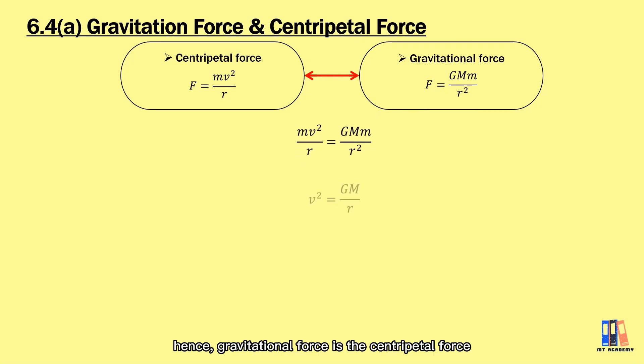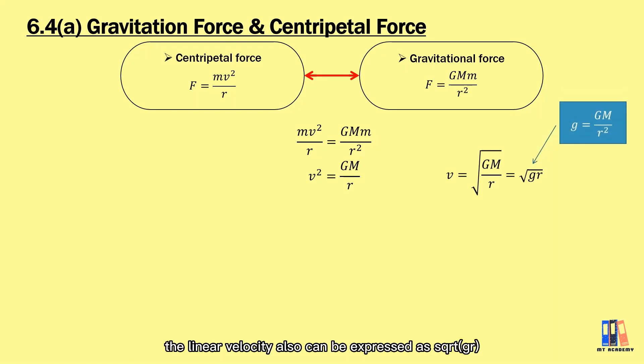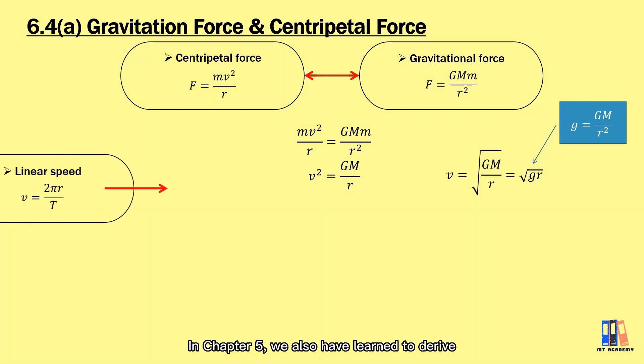Hence, gravitational force is the centrifugal force. We can equate those two equations, and we can derive the linear velocity of satellite in a certain orbit is square root of GM over r. Based on the equation of g equal to GM over r squared, the linear velocity also can be expressed as square root gr.